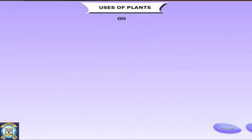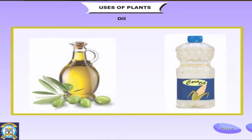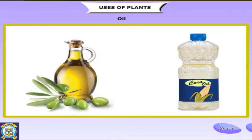Seeds of trees and plants are the main source of the oil we use for cooking. Groundnut, coconut, sunflower, mustard and sesame seeds yield oil. In Europe, olive oil is used. Some seeds such as rapeseed and cotton seed give us oil that is non-edible — we cannot use it for cooking. Such oils are used to make soaps.